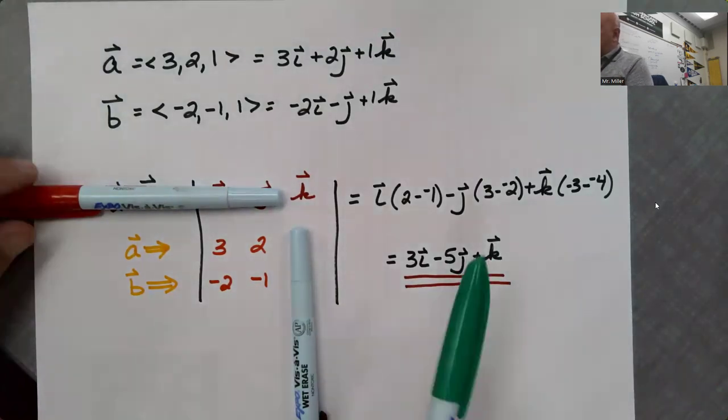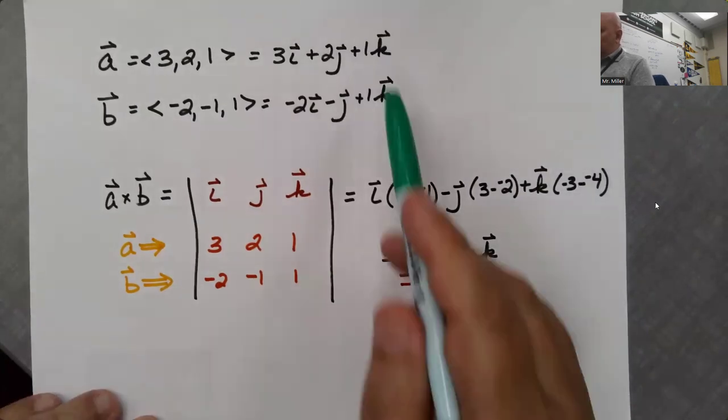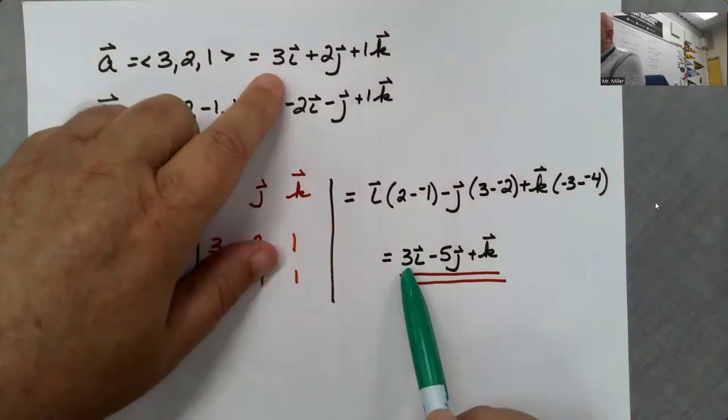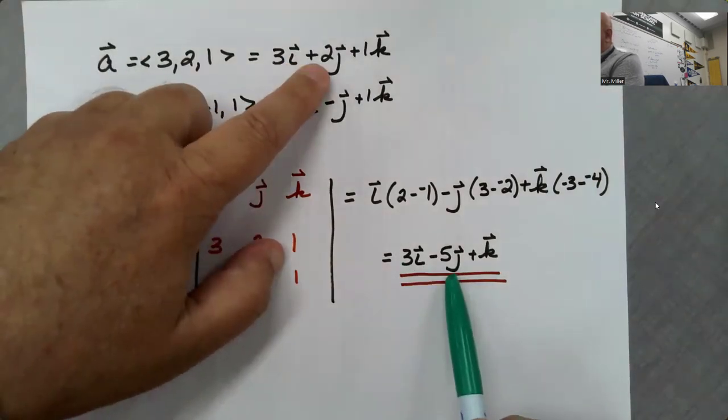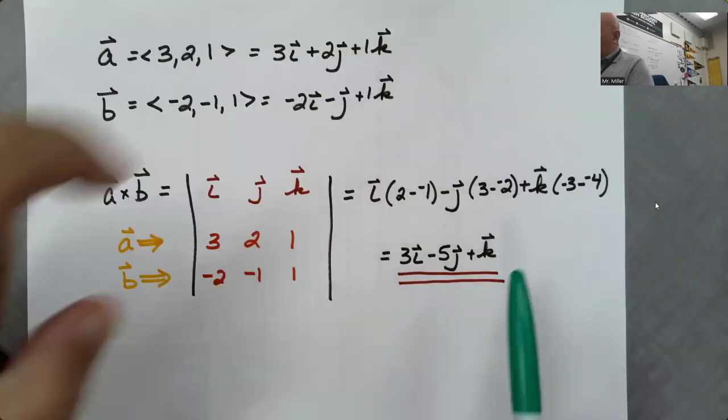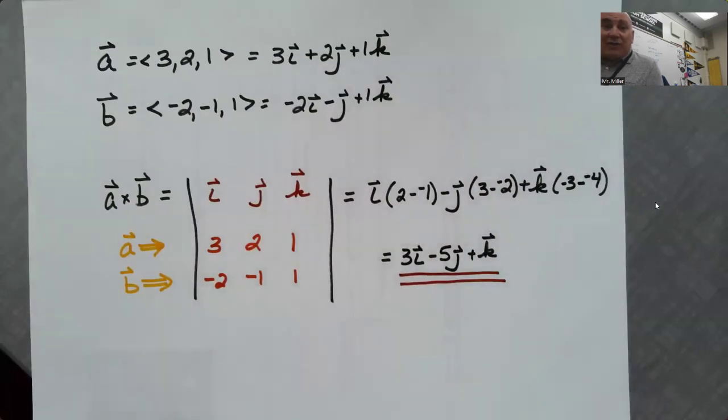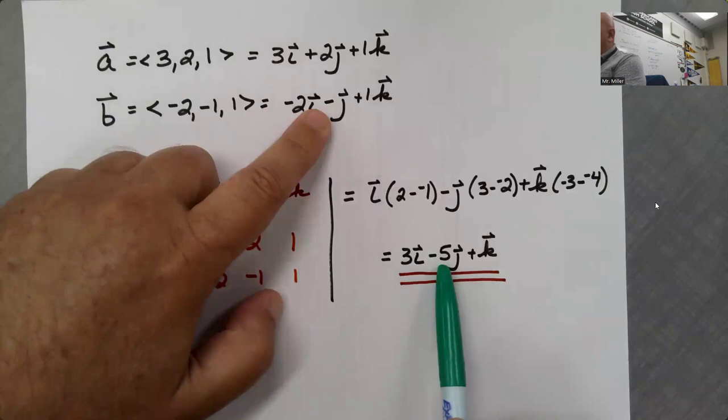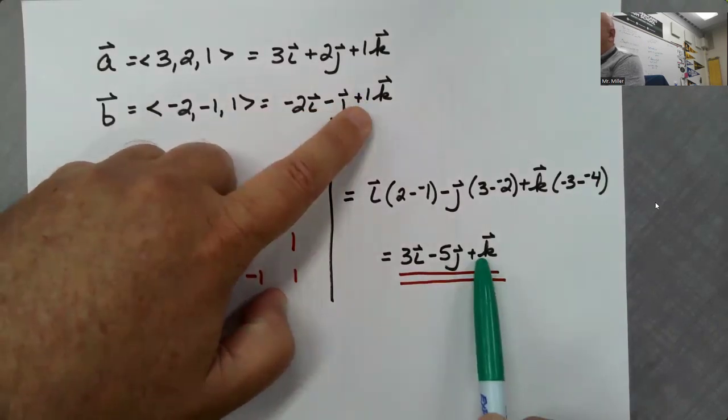So, this vector should be perpendicular to both of these. And let's check. Nine minus ten is negative one, plus one is zero. Okay. That product is zero. So, this new vector is perpendicular to A.